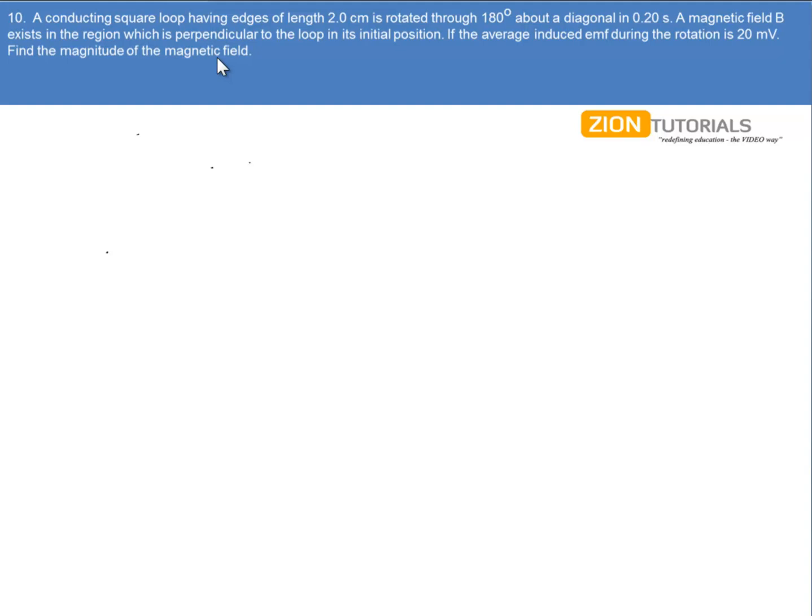We have a square loop whose edges are given by 2 cm, that is a is 2 cm or 0.02 m.